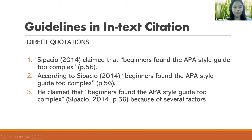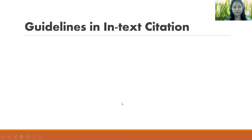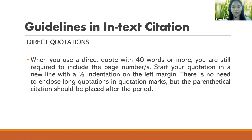Another example: 'According to' followed directly by the idea, then the page number in parentheses. It could also be: 'He claimed that beginners found the APA style guide too complex (Sipasio, 2014, p. page number).' When both the surname of the author and the year of publication are in parentheses, the page number is also included inside those parentheses. That is for citations of less than 40 words.